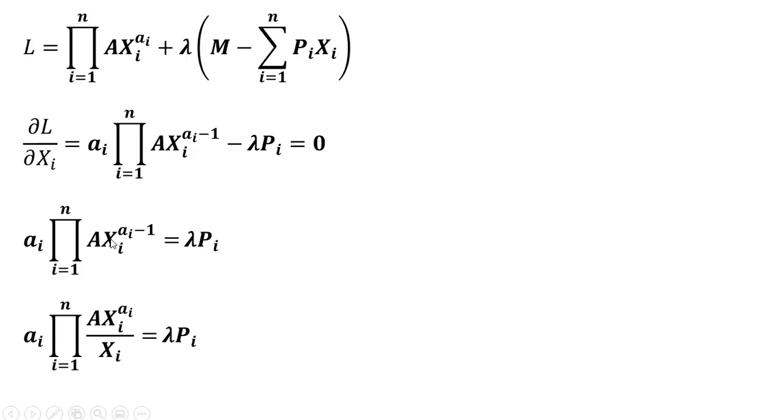And since we have x raised to the minus 1, we can move one of those x's down here in the denominator. And then the next step I did here was I multiplied both sides through by x, leaving us with this result.